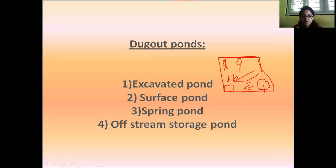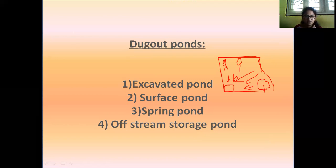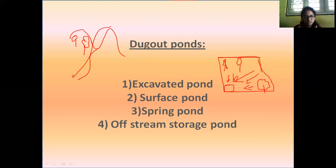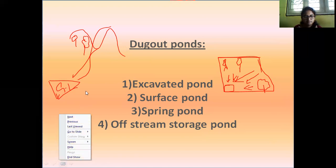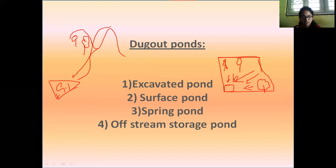Off-stream storage ponds are built by the sides of streams and provided with pipes for the flow of water from the stream into the ground. The water comes from upstream and is connected via pipes that reach down to the ground surface level.